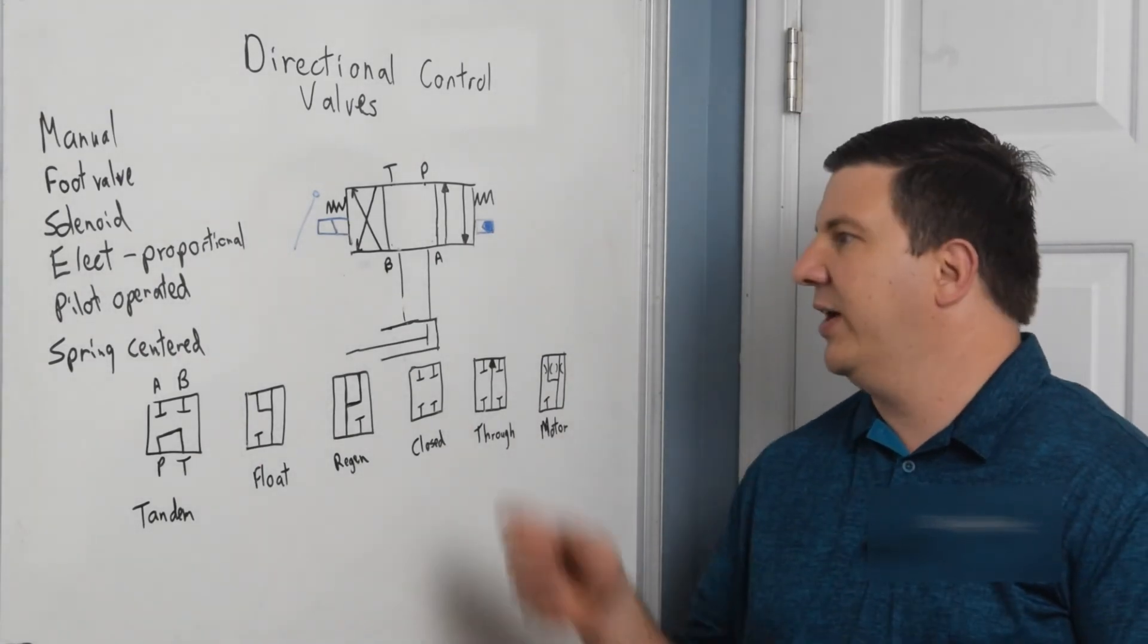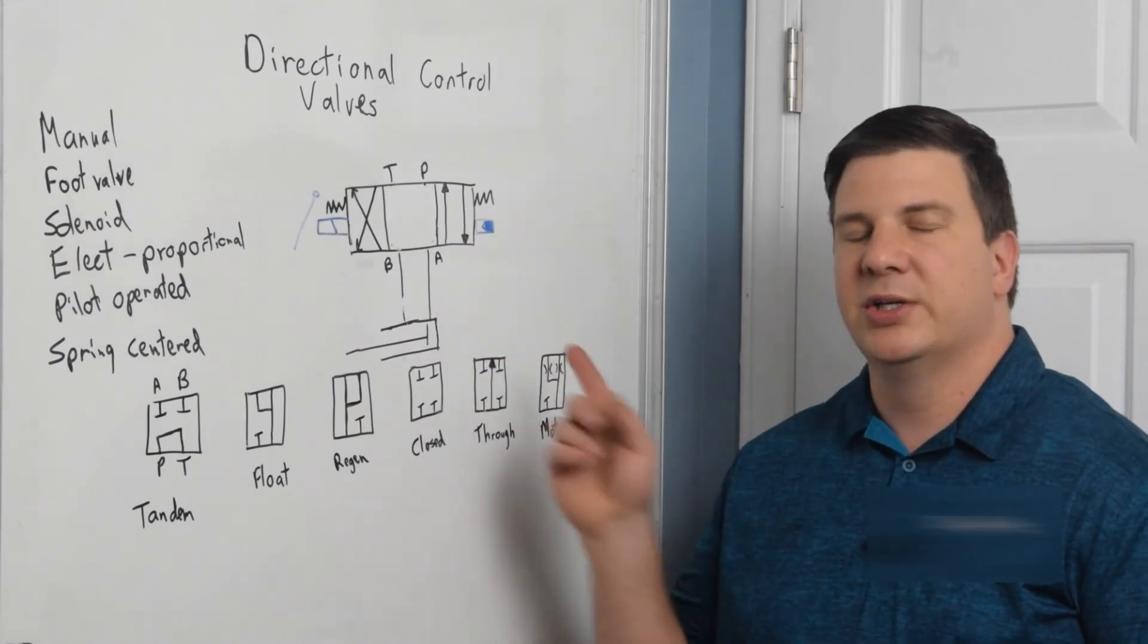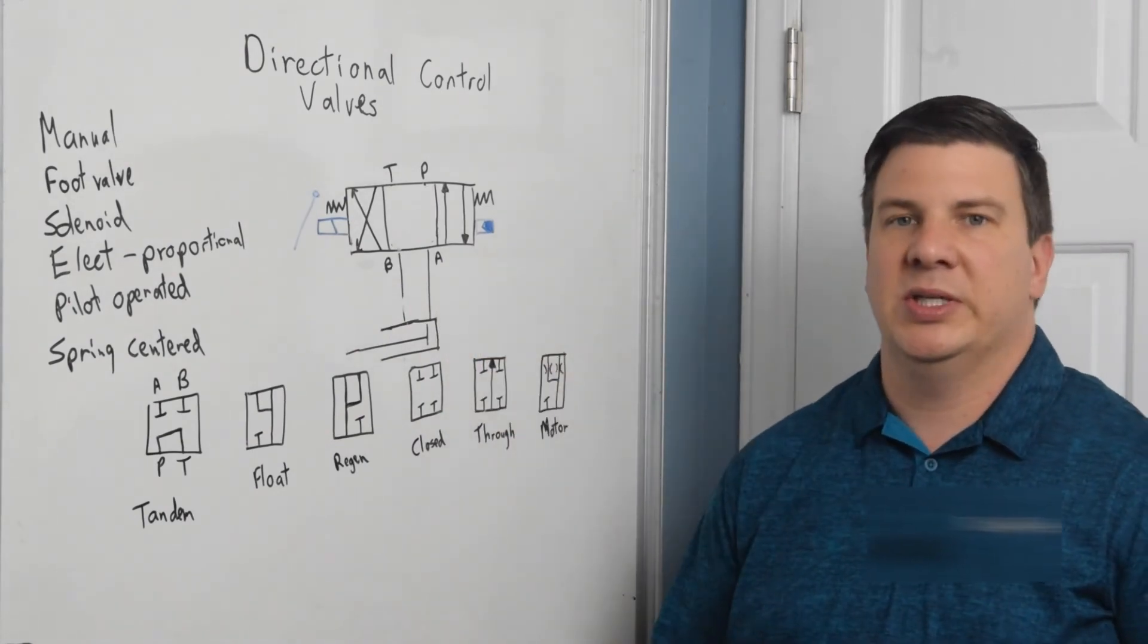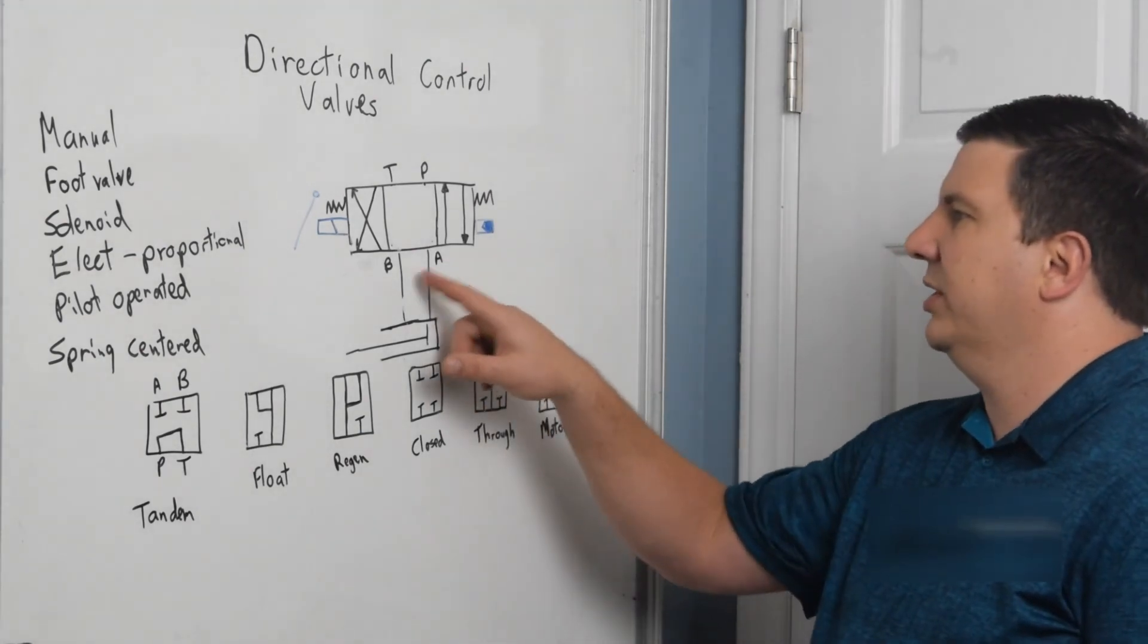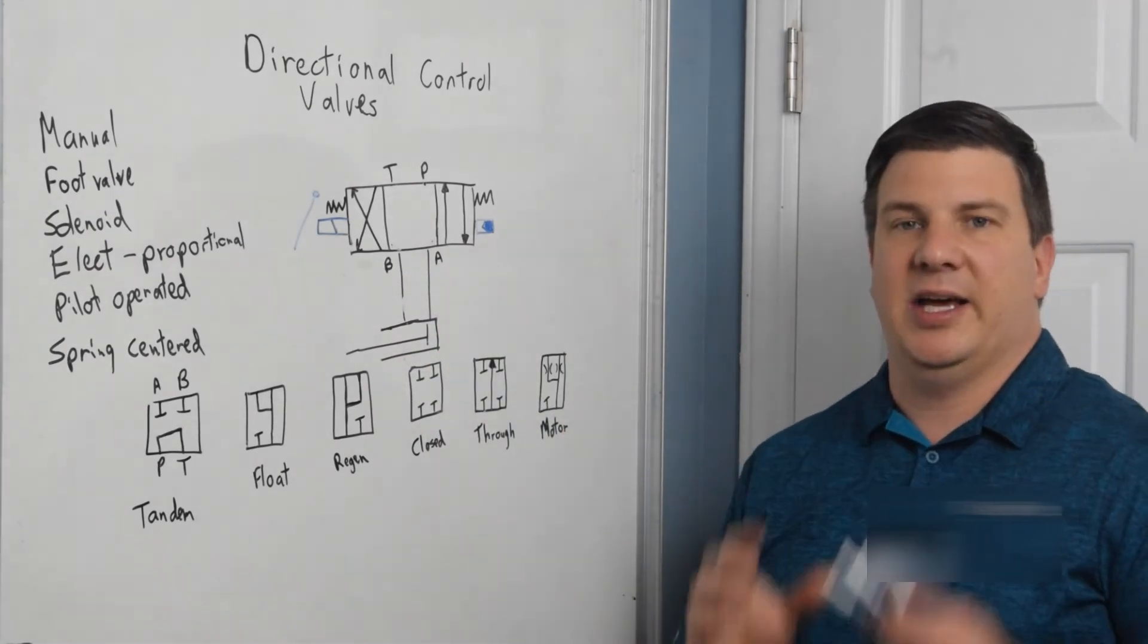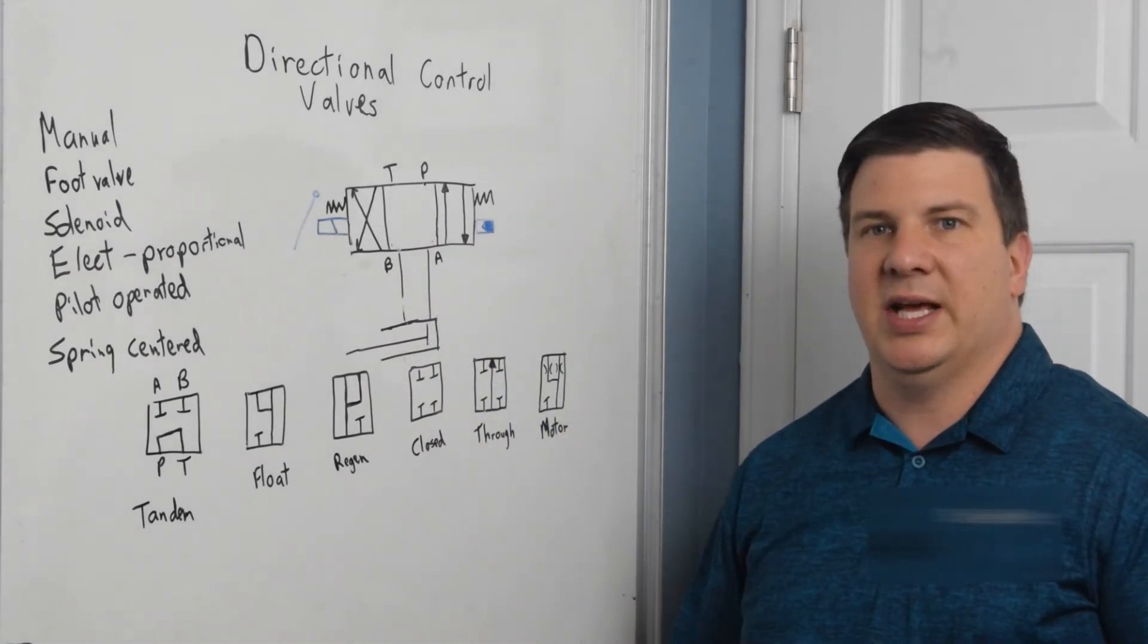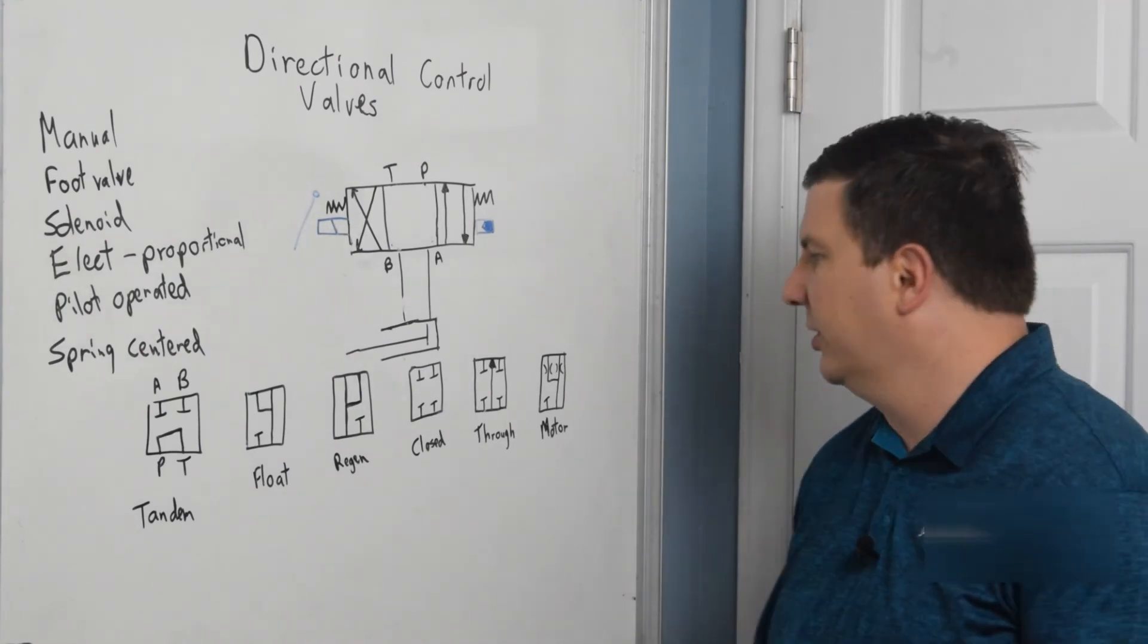If you have a counterbalance valve in between your valve and your cylinder, what it allows it to do is to bleed off the pressure of the tank or the A and B ports, excuse me. And just allows that pressure to go to nothing when you're not using that function.